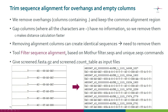When we remove columns, we can actually introduce identical sequences, so we need to again extract unique sequences. The Chipster tool to use is called 'Filter Sequence Alignment,' and it is based on the Mothur commands filter.seqs and unique.seqs.